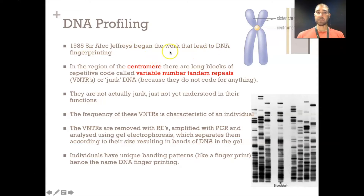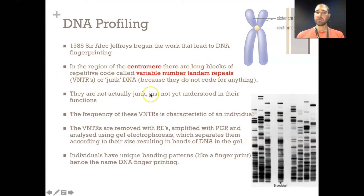In 1985, Alec Jeffreys became the pioneer of work that led to DNA fingerprinting. In the region of the centromere — the middle part of the chromosome — there are long blocks of repetitive code called variable number tandem repeats, VNTRs, or junk DNA. It's not really junk; we're just not really sure what all the functions of that DNA are. The frequency of those VNTRs is characteristic.